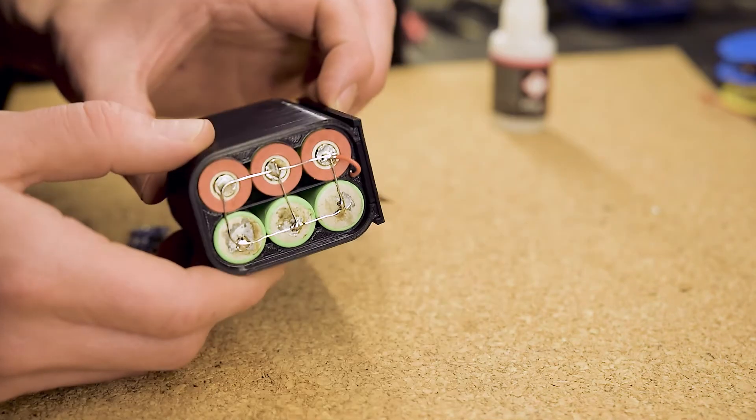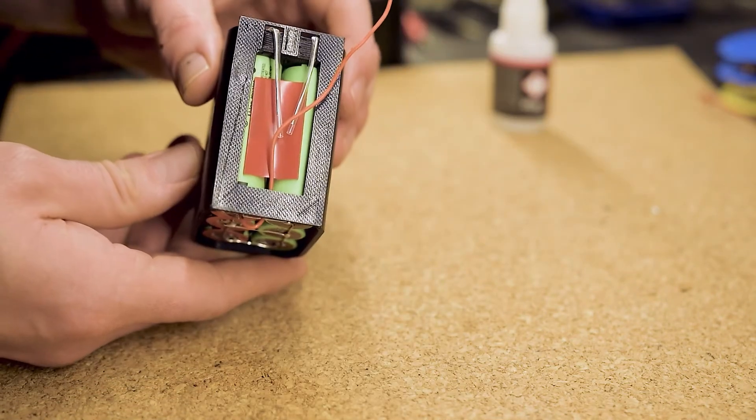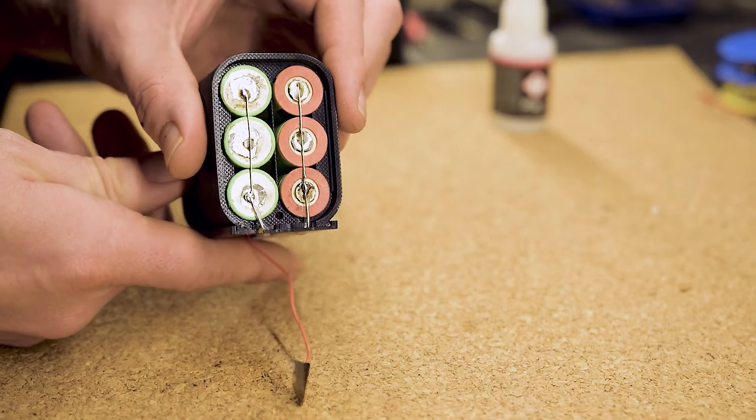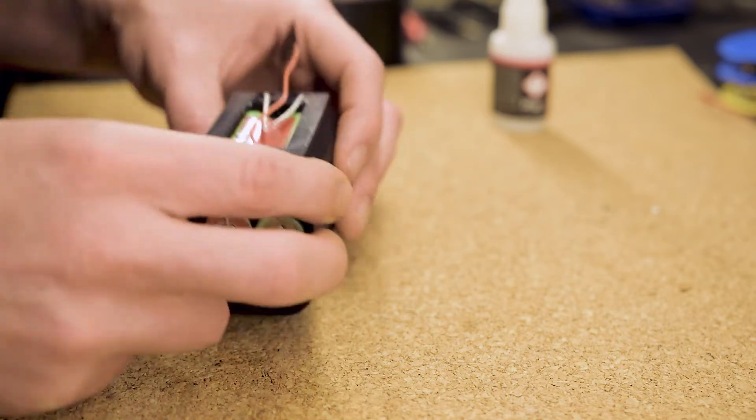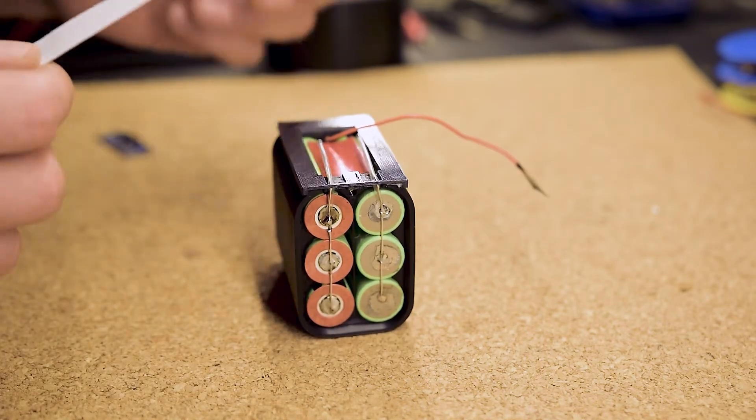When finished, it should look like this. Now, we are ready to solder the BMS. Regarding the order in which the connections are made, you have to read the documentation for your BMS.